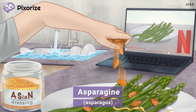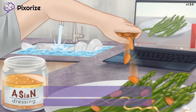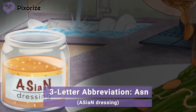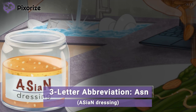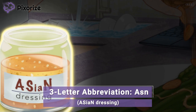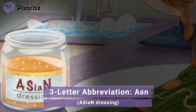Let's move on to learn the abbreviations of this amino acid. Plain asparagus can be pretty boring, so to add some pizazz, you are splashing it with some homemade Asian dressing. This Asian dressing is our symbol for A-S-N, the three-letter abbreviation of asparagine.